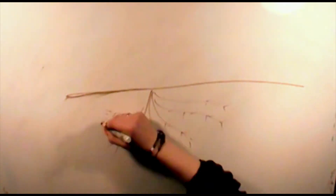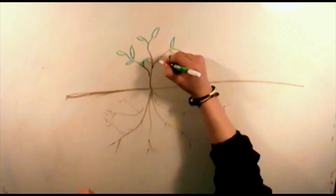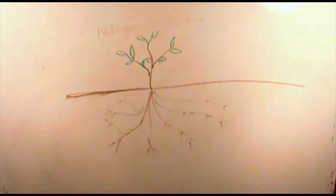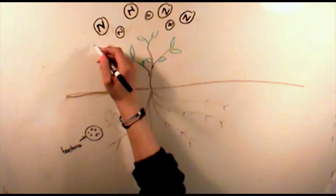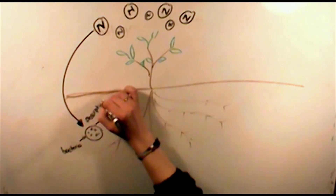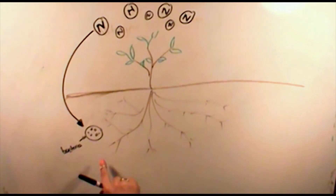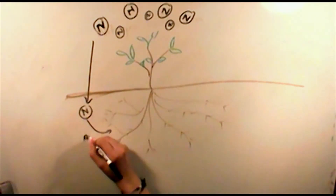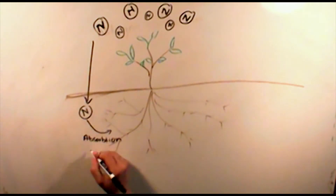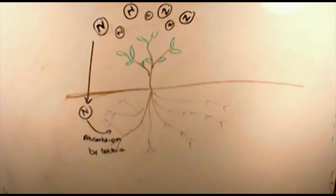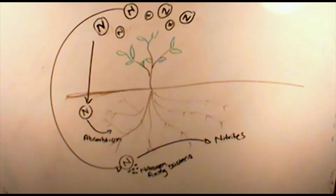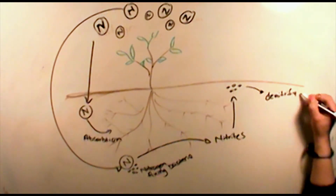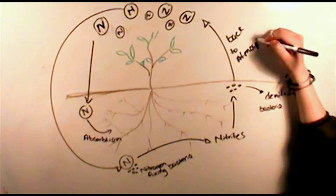Only special microbacteria are able to take nitrogen from the atmosphere and convert it into a form that multicellular life can use. These bacteria live in a small area between a plant's root and the soil called the rhizosphere. Without roots to supply an environment for these nitrogen-fixing bacteria to survive, the majority of organisms on Earth could not develop major proteins and would cease to exist. The converted nitrogen will eventually find its way back to the atmosphere through denitrifying bacteria.